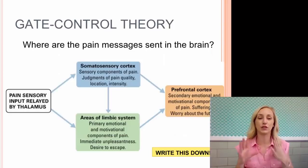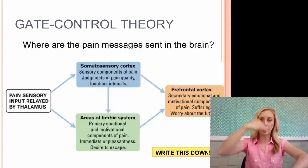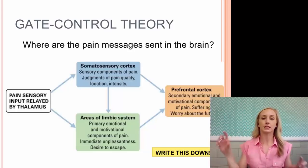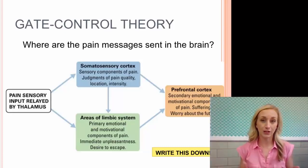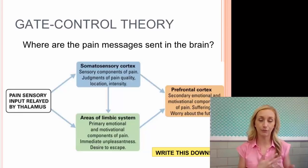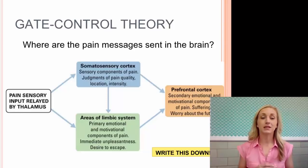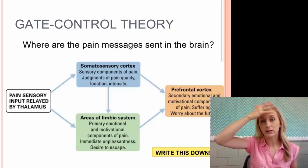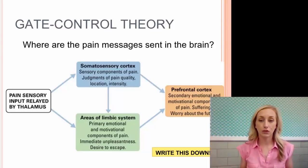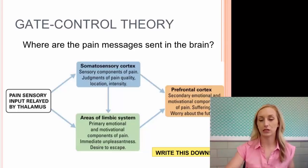Pain sensory input is relayed by the thalamus first. Say you burn your arm — that message goes to your spine and then straight to the thalamus, which then sends it to multiple areas. First, the sensory cortex handles the sensory components of pain: judgments of pain quality, location, and intensity — how bad is the injury? Then areas of the limbic system, including the amygdala, handle primary emotional and motivational components: immediate unpleasantness and the desire to escape, the fight-or-flight response. Finally, it's sent to the prefrontal cortex, which handles secondary emotional components — worry about the future — causing more anxiety and an ugly cycle in the perception of pain.